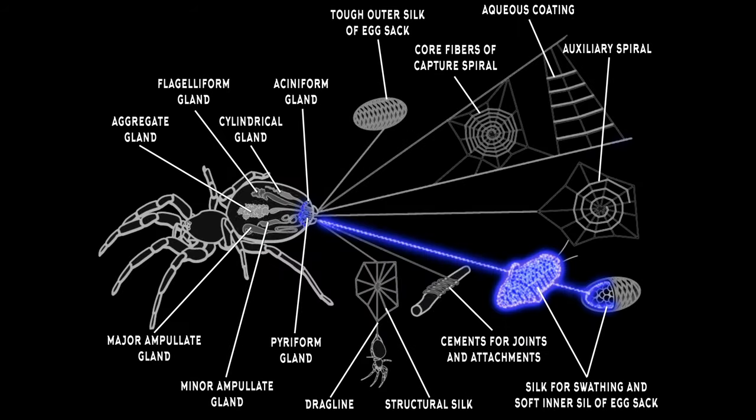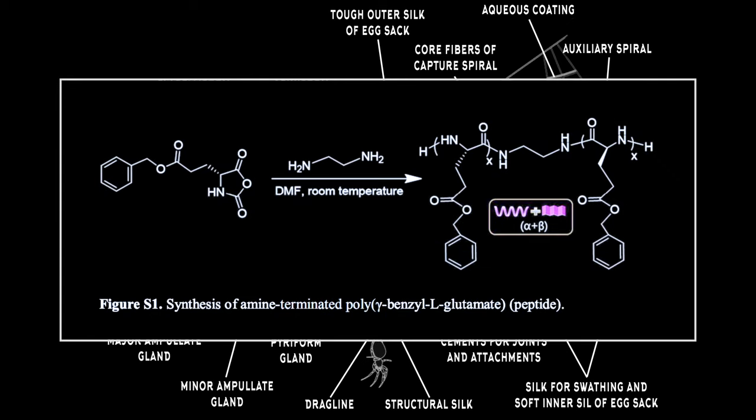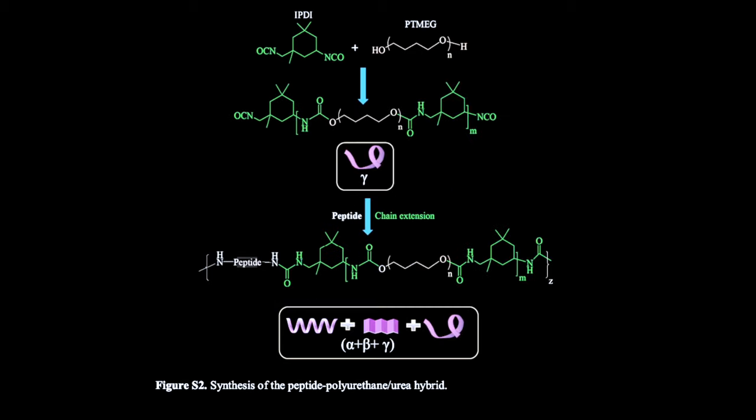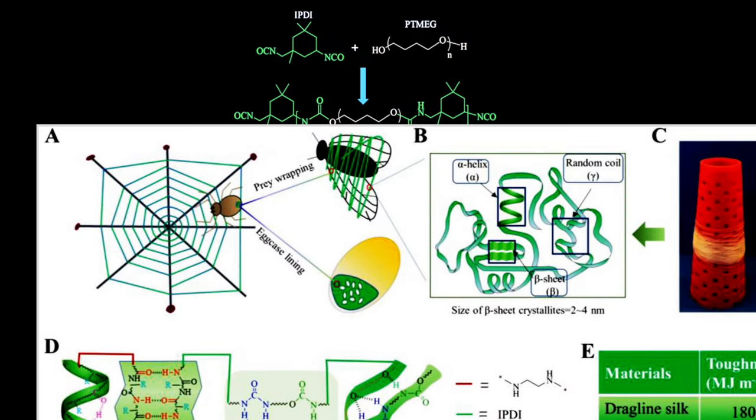The results are a pseudoprotein polymer synthesis that mimics the structure of aciniform silk, the toughest type of spider silk. The process involves the use of amine terminated polygamma-benzyl L-glutamate as a peptide synthesized with other polymer ingredients, to create peptide polyurethane ureas, with folding structures that mimic the beta sheets and alpha helices in aciniform silk.